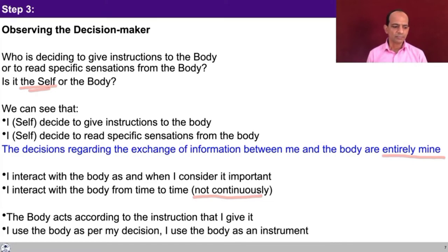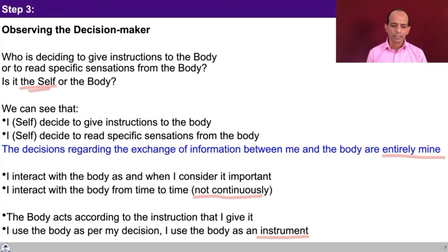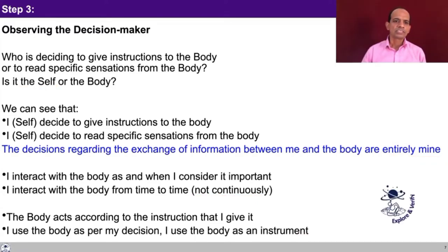The body acts according to the instruction that I give it, and I use the body as my instrument. We have been using this word instrument — that the body is an instrument — but unless you are able to observe this directly, that does not become very clear. Try to find out the exchange of information taking place in you, and also try to find out whether it is continuous or from time to time. It might be regular, but it is not continuous. With this, you can get the clarity that the body is an instrument — it is outside you. You are exchanging information with the body as per the need.